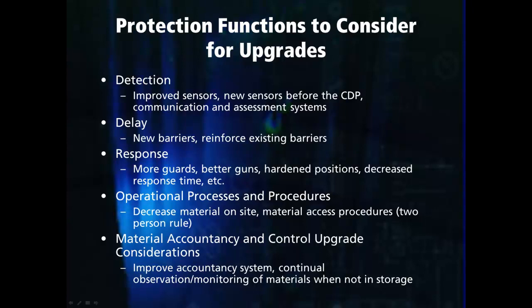Upgrades could also include changes not directly related to the physical protection system components. These may include things like decreasing the amount of material on site or in use during operations, or enhancing material access procedures — for example, installing the two-person rule.